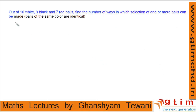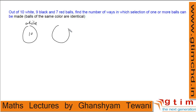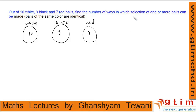Try this question: out of 10 white, 9 black, and 7 red balls, find the number of ways in which a selection of one or more balls can be made, given that balls of the same color are identical. We need to select at least 1 ball from the total 26 balls.